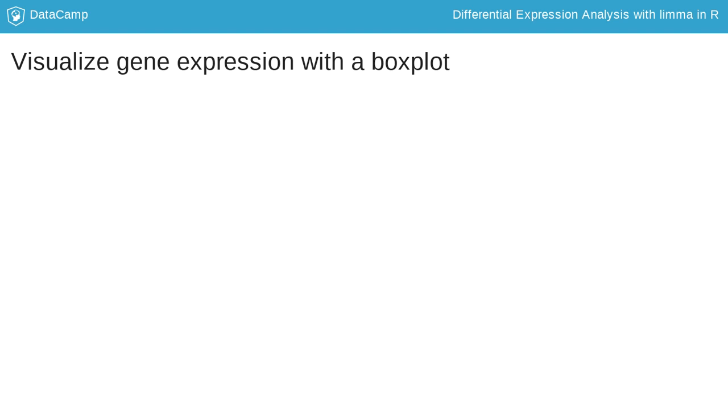To both practice interacting with these three datasets, and to become more familiar with the data, you will create a boxplot for a single gene. The function boxplot accepts a formula as its first argument. You list the variables to be plotted on the y-axis to the left of the tilde, and on the right the variable for the x-axis. R will create one box plot for each value of the x-axis variable. You can add a title with the argument main.